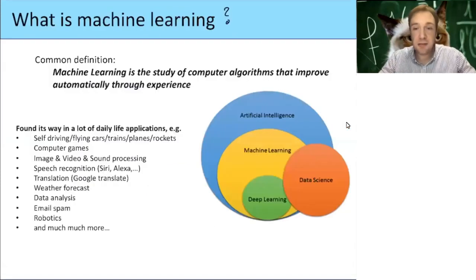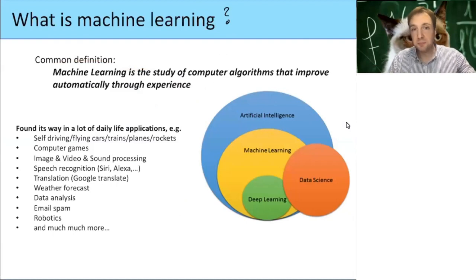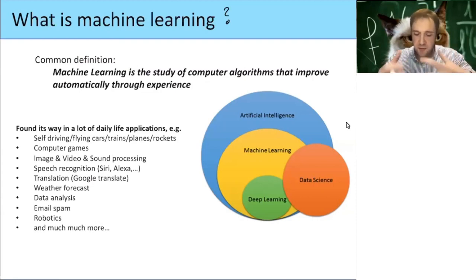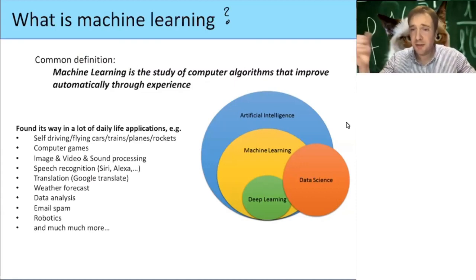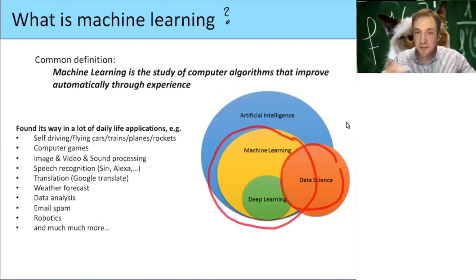So what is machine learning? There are a lot of different definitions, but one common definition is that machine learning is the study of computer algorithms that improve automatically through experience. These are machines with algorithms that get better and better over time. Usually experience means getting more and more data. Machine learning is a subfield of artificial intelligence and also relates to data science.